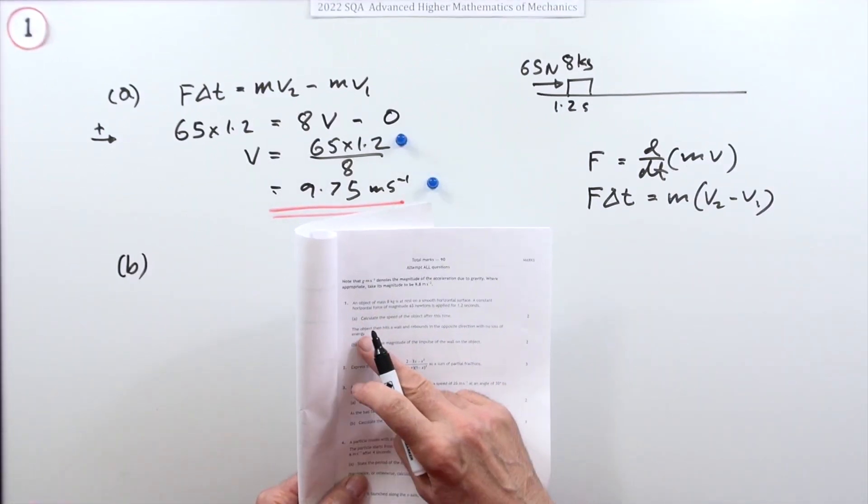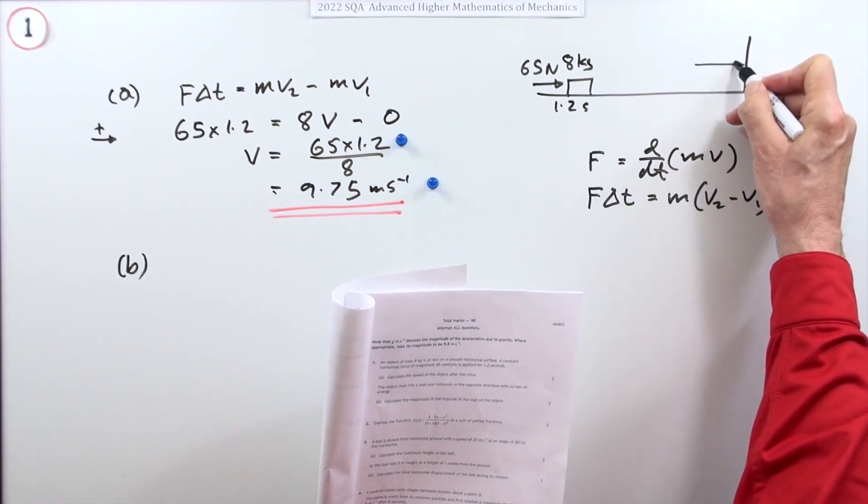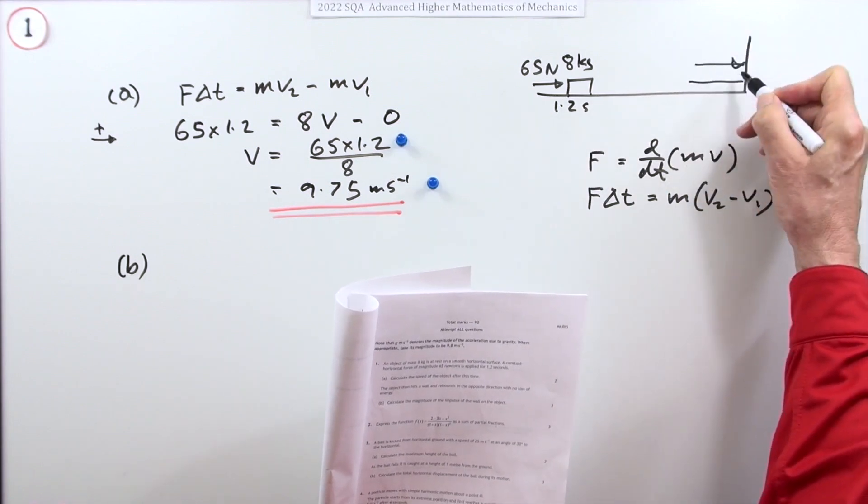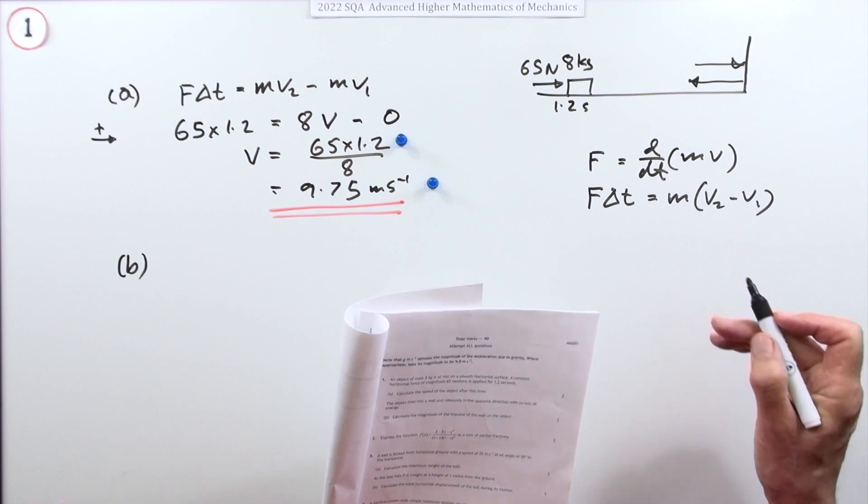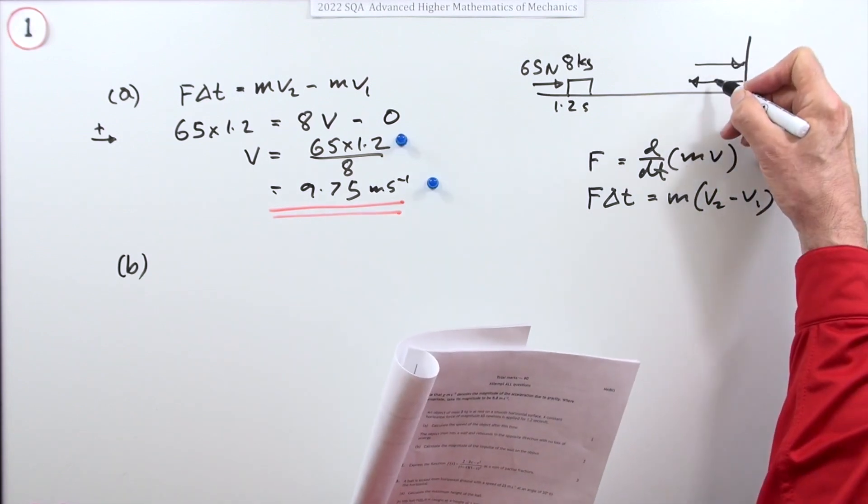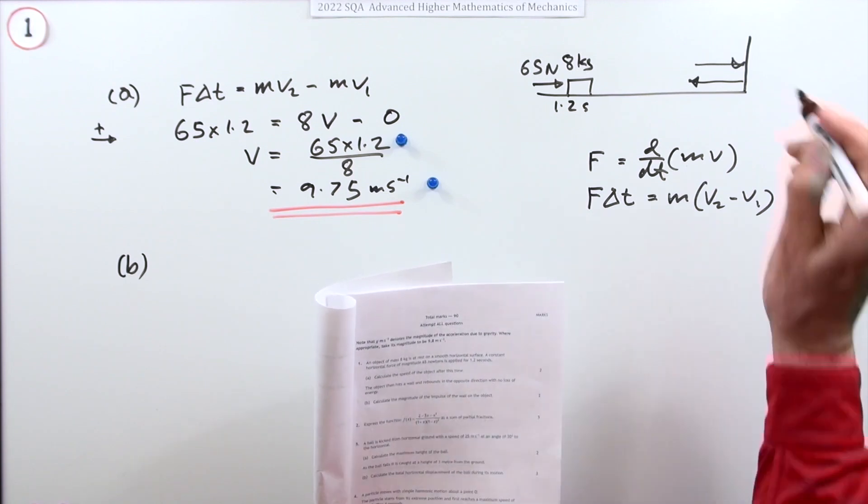Part b then. The object then hits a wall, here's a wall, hits a wall and rebounds. So it comes in obviously at that speed that we just worked out and rebounds with no loss of energy. So whatever speed it was coming in at, it went off at the same speed.